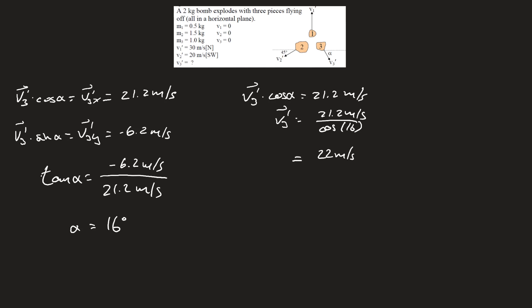But of course, include the angle in your final answer. So v3 prime is 22 meters per second, east 16 degrees south.